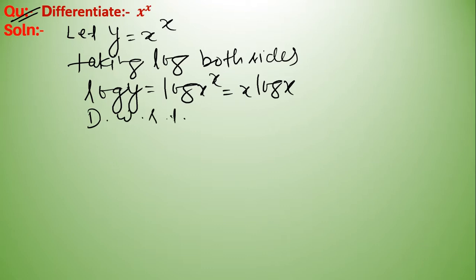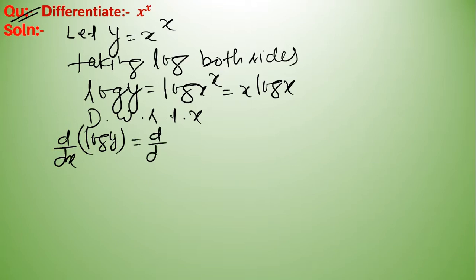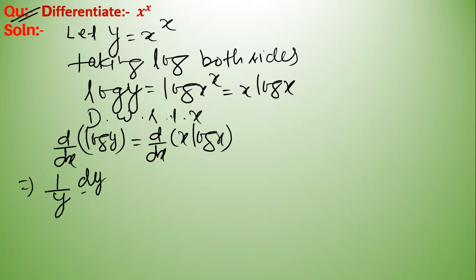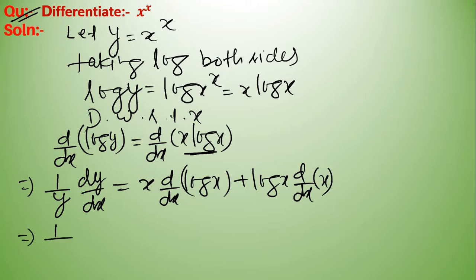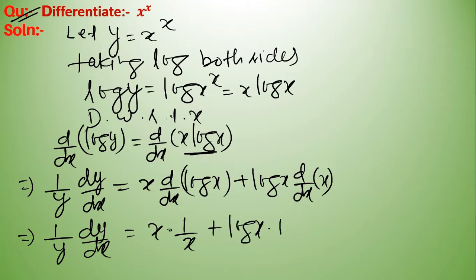Now differentiate with respect to x. The derivative of log y equals the derivative of x log x. So 1 upon y times dy upon dx equals — here we use the product rule — x into derivative of log x, plus log x into derivative of x.